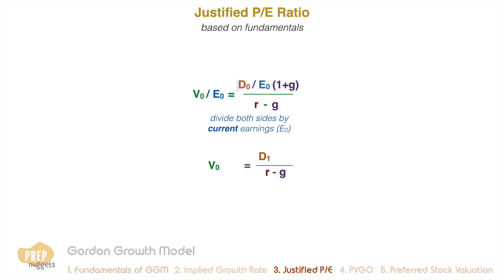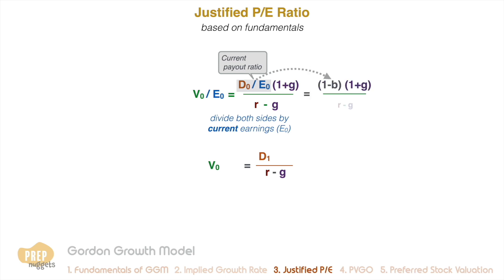On the right-hand side, we have the current dividend divided by current earnings in the numerator. This is the current dividend payout ratio. As the payout ratio is 1 minus the retention ratio, another way of expressing this is as such, where B is the retention ratio.